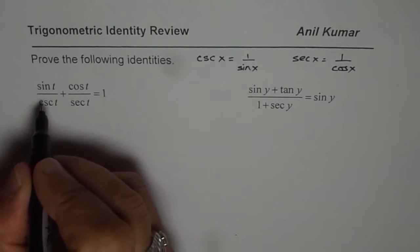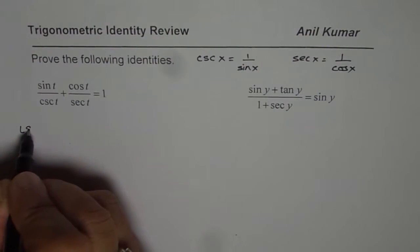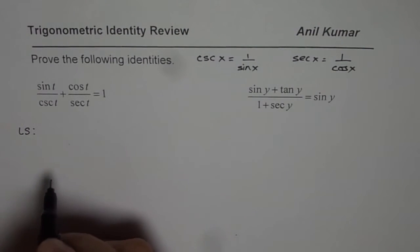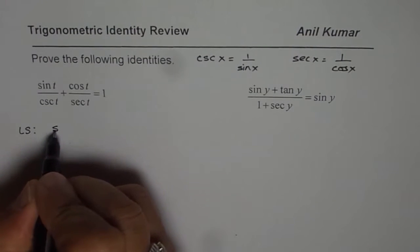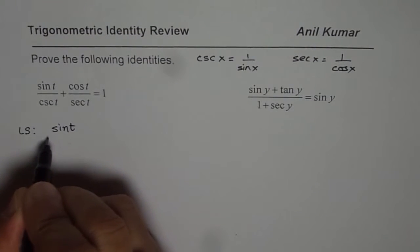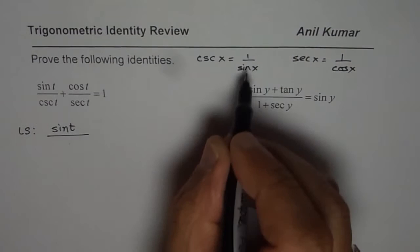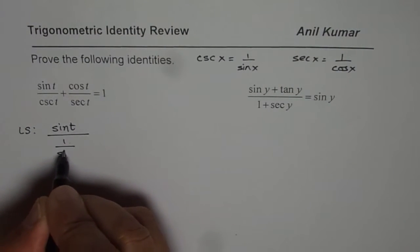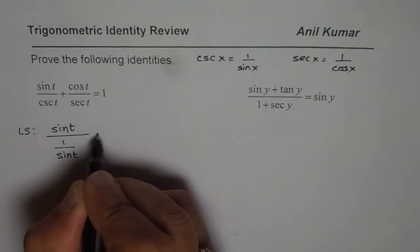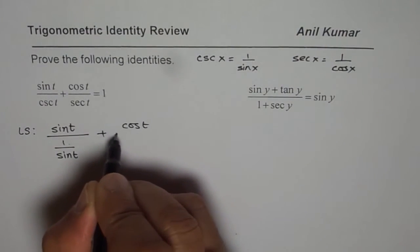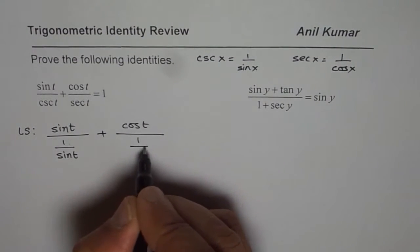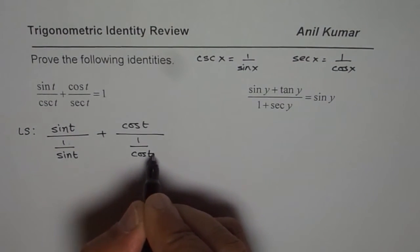Let's begin from the left side. In any identity, you have to begin from left side or right side, one side, and prove the other. We have sine t, so I'm writing sine t as such. Cosecant t is 1 over sine, so it is 1 over sine t plus cos t divided by secant is 1 over cos. So I'll write this as 1 over cos t.